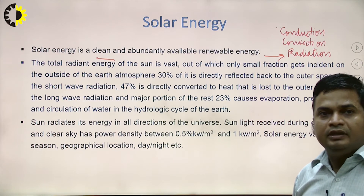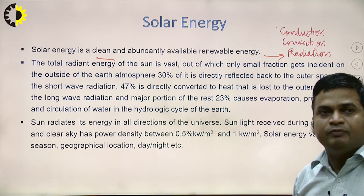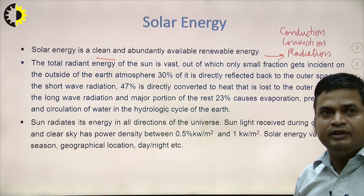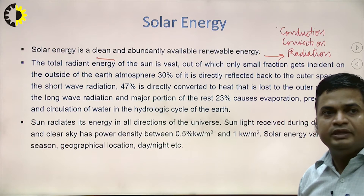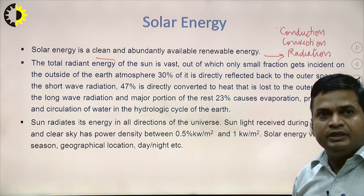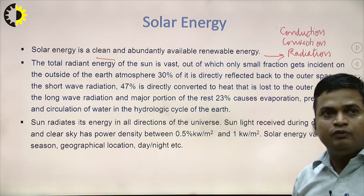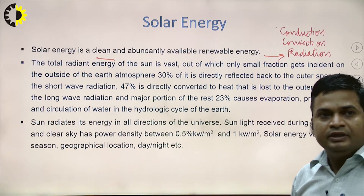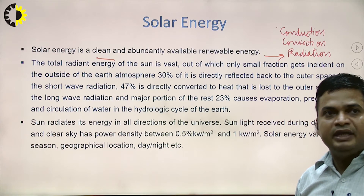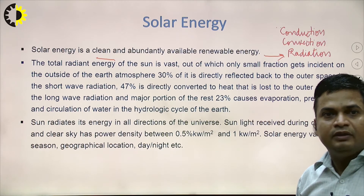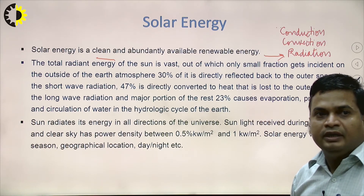In cold seasons, the direction changes and therefore the energy received from the sun is different. Geographical location also matters — hill areas have a different amount of energy than plain areas. In colder countries like American countries, the amount is different than in India. During the day, solar energy is maximum, while at night it is almost zero. So solar energy varies with season, geographical location, and time of day.